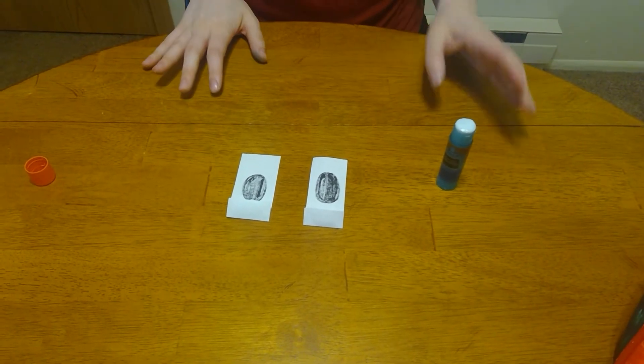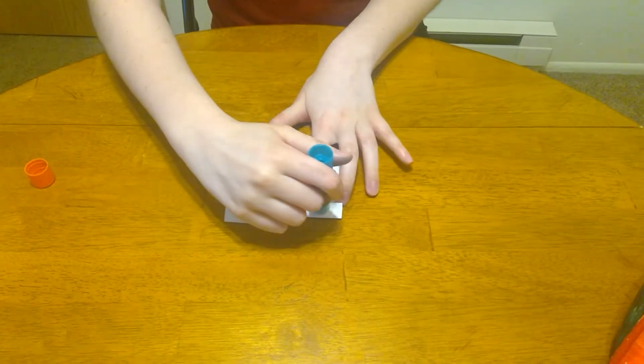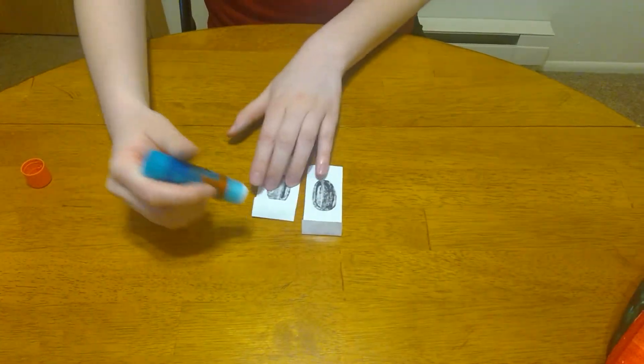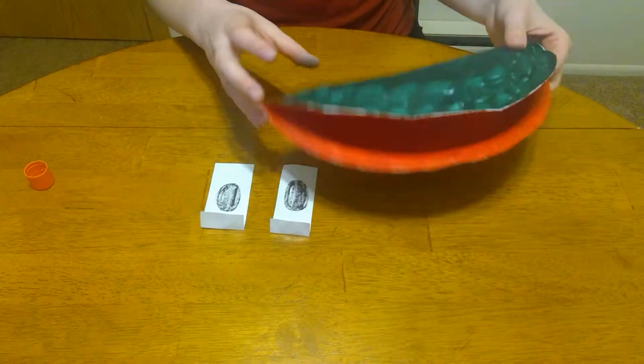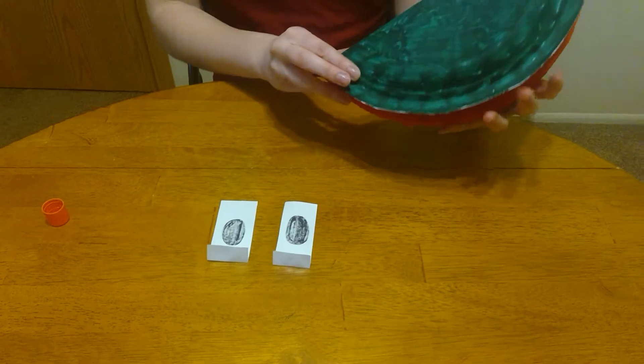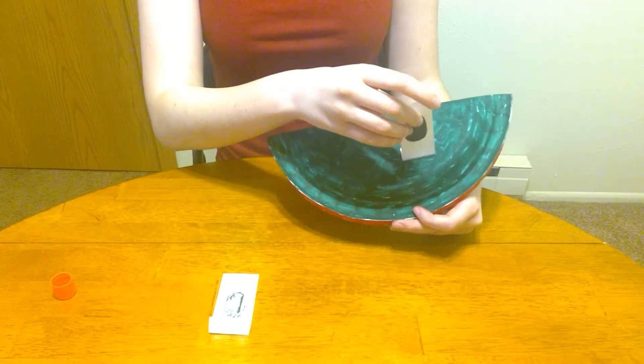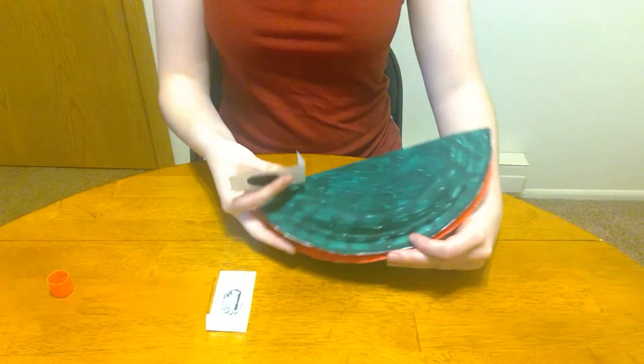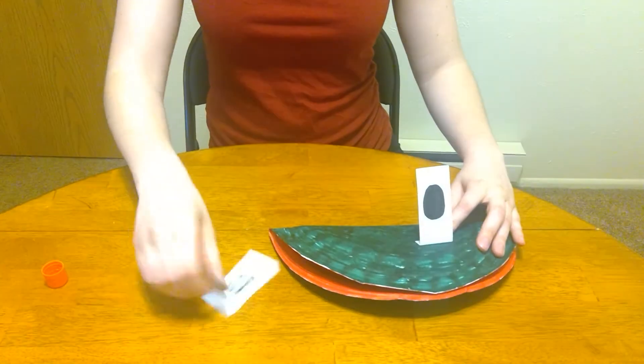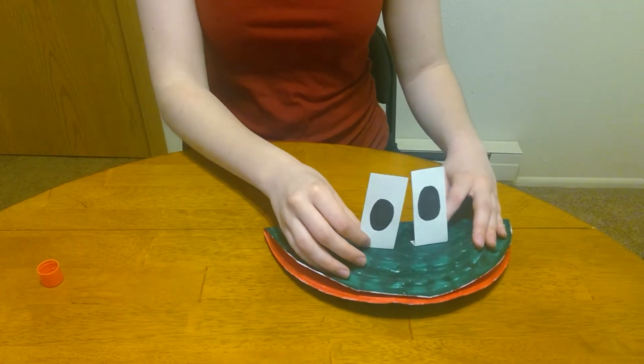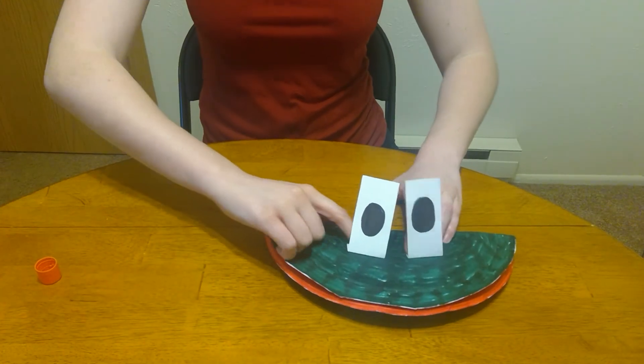Once you've finished the circles, you're going to take your glue and put some on the folded part, on both of them. Next, you're going to take your paper plate and you're going to put the piece of paper on the top. These are going to act as the frog's eyes. Make sure they're pressed down really nice.